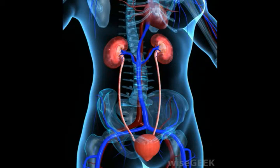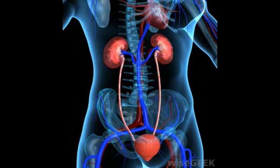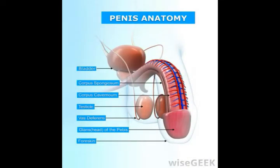In human anatomy, the loin refers to an area extending vertically from just below the waist, or more specifically from the bottom of the ribcage, to just below the pelvis. The term is somewhat inexact, and is most often used to describe the sides of the body in the area below the ribs, sometimes also called the flanks, and the parts of the lower back on either side of the spine.